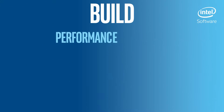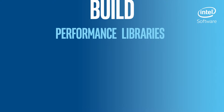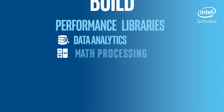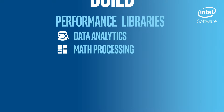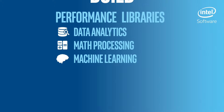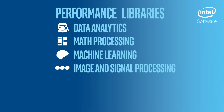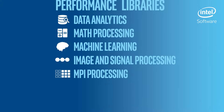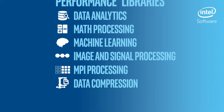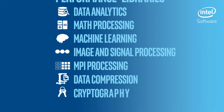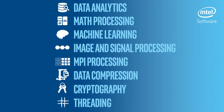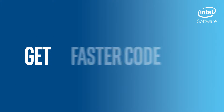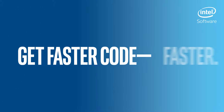Pre-threaded, vectorized, and optimized libraries for data analytics, math processing, machine learning, image and signal processing, MPI processing, data compression, cryptography, and threading are some of the easiest ways to get faster code.